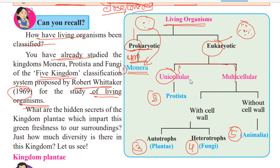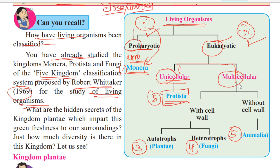Multicellular organisms have many cells working together. Now, among eukaryotic unicellular organisms, the cells are well developed. Moving on to multicellular organisms, they are further divided into two groups: with cell wall and without cell wall.